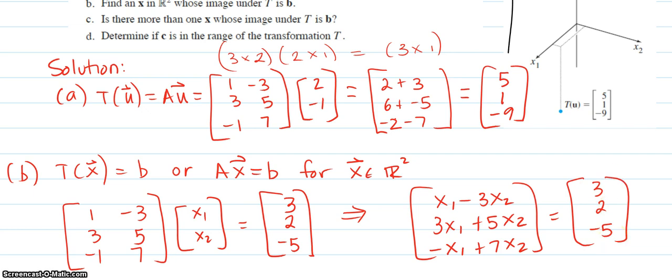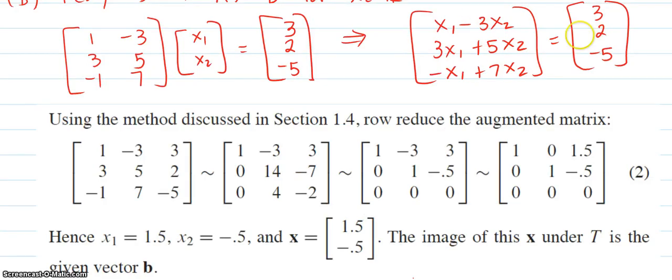So to solve that, this looks like a row reduction problem. If you just looked at the coefficients of that matrix, we had 1, negative 3, 3, 3, 5, 2, negative 1, 7, and negative 5. So I'm just going to add a line right there. I copied this from the book from section 1.4. But we can just row reduce this by getting a 0 here, getting a 0 here, then getting a 1 here, so they divide everything by 14, and then getting a 0 there. If you do those steps, you will end up with this matrix. Clearly it looks like x1 is 1.5 and x2 is negative 0.5. So that is the x.